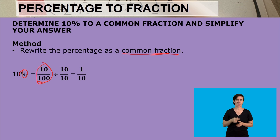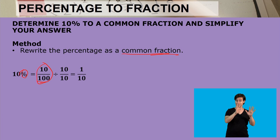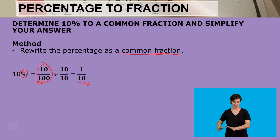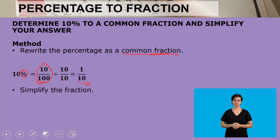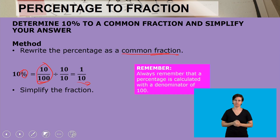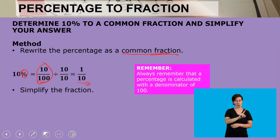To simplify the fraction, we divide it by ten over ten. So ten divided by ten becomes one, and a hundred divided by ten becomes ten. So that becomes our final simplified fraction: one tenth. Always remember that a percentage is calculated with the denominator of a hundred, so whenever you're working with percentages, remember that.